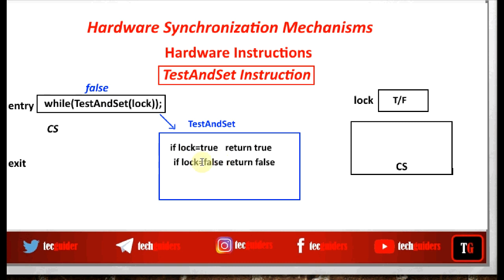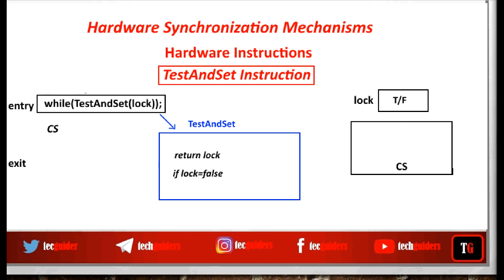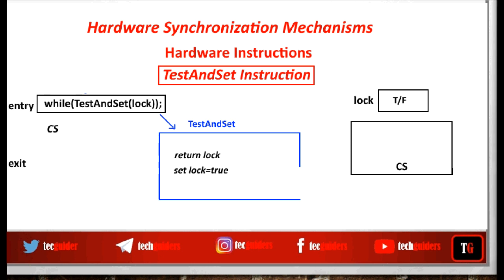Generally, the function should return the value of the lock variable — so it returns the value of lock. Then we need to set the lock. If lock equals false, along with returning this false value, the lock should be set to true, and then the process can enter the critical section. And if the lock value is true, we let lock remain as true. Thus, whether the value of lock is false or true, finally the value of lock should be true. So this function sets lock to true and returns the previous value of lock.